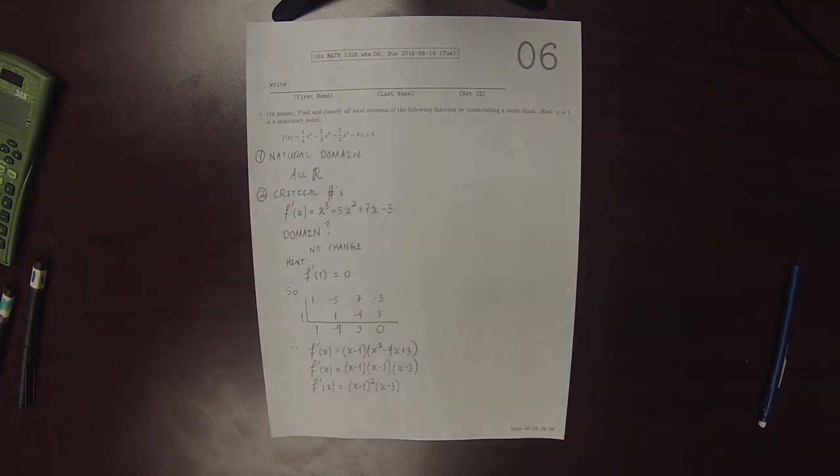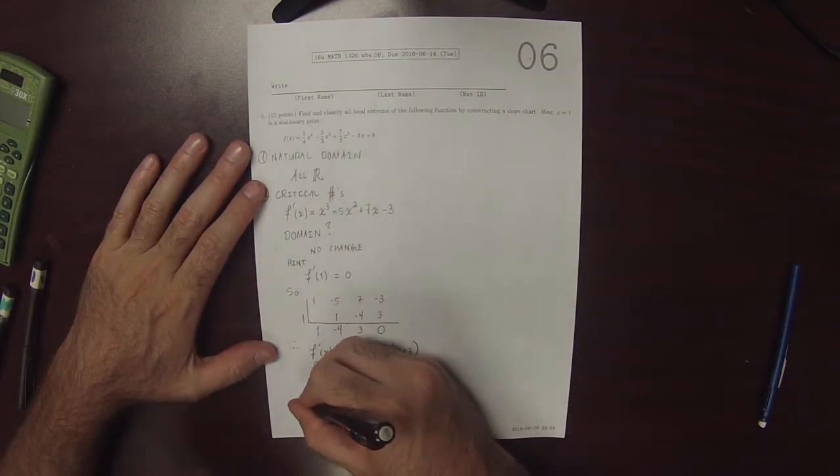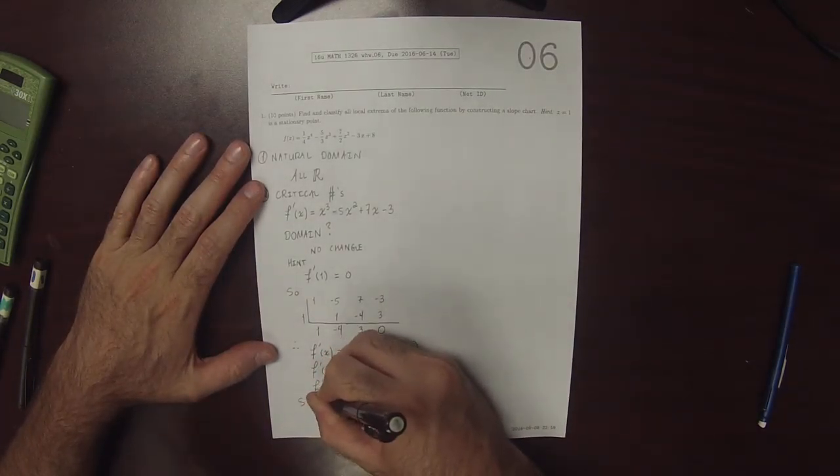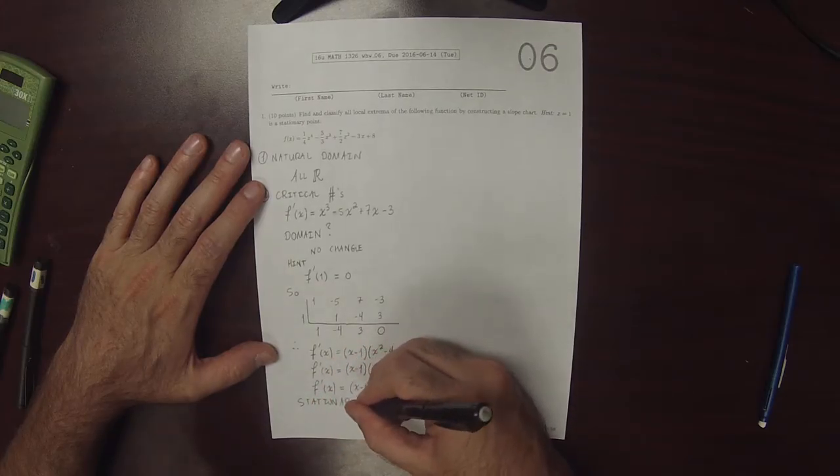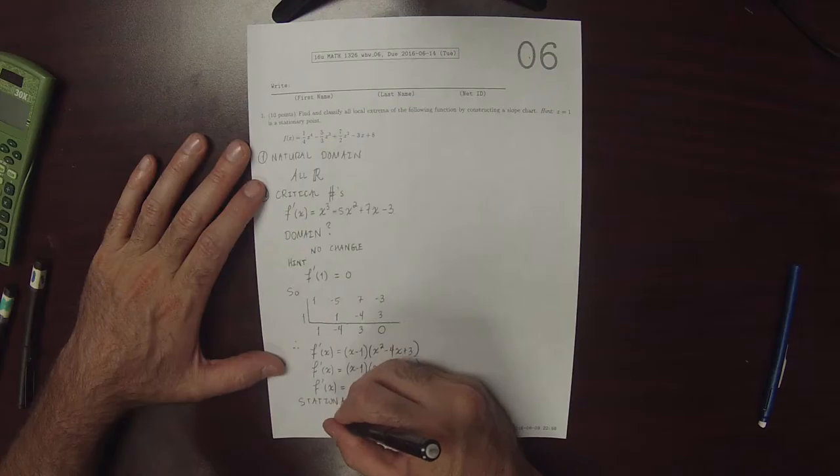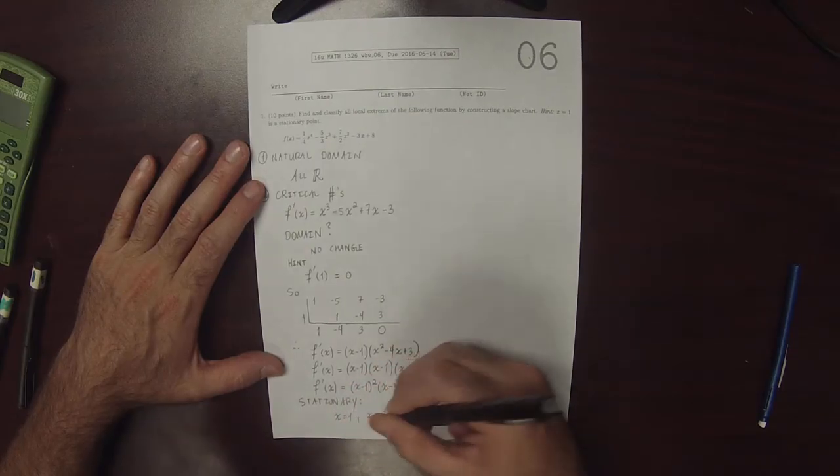So we can see that the stationary points of the function are exactly x = 1 and x = 3.